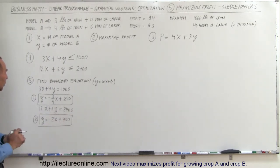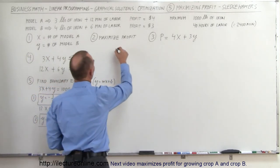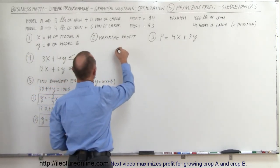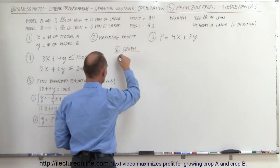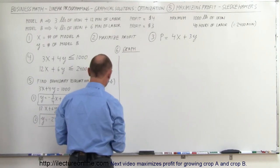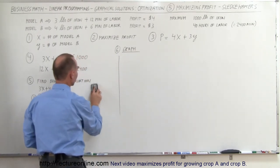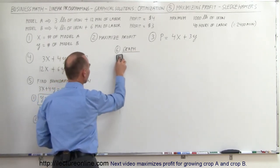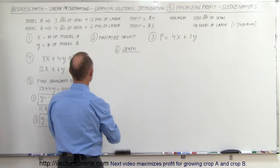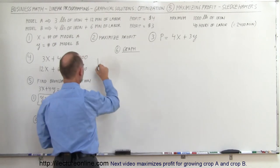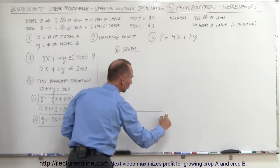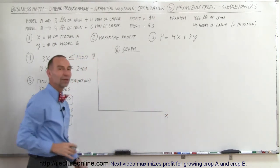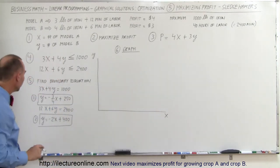Now we can go ahead and graph those equations — that is step number 6, graph. We work in the first quadrant.